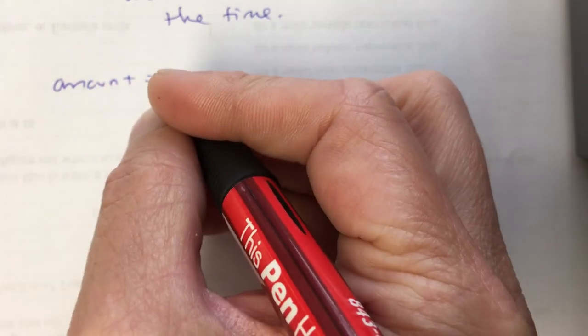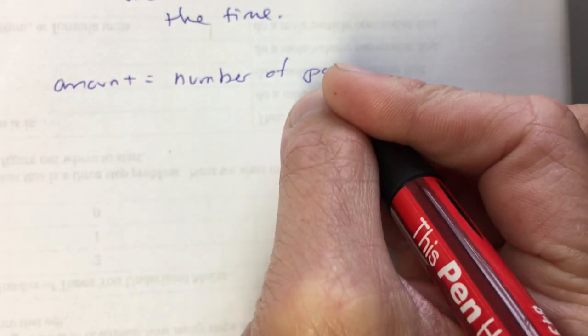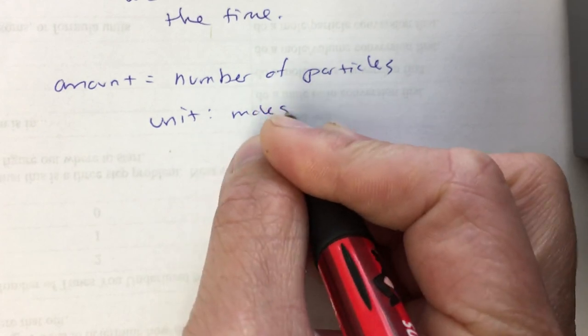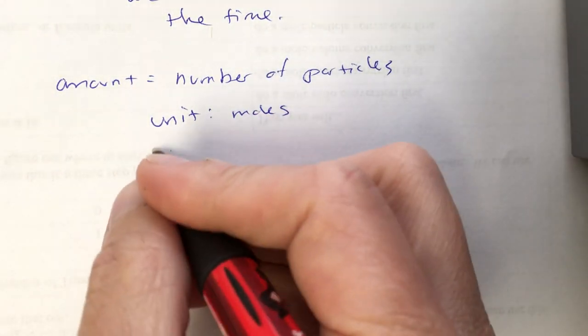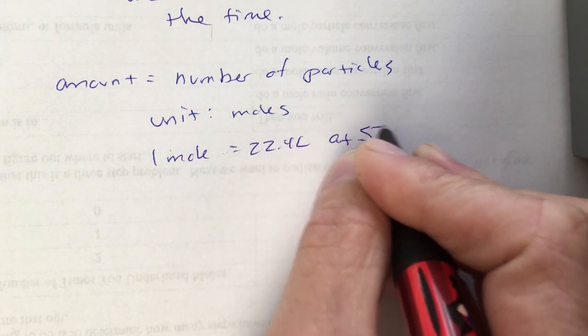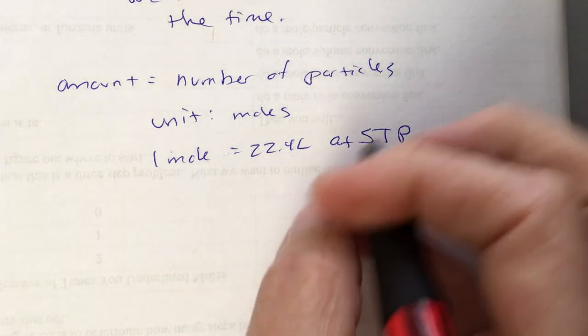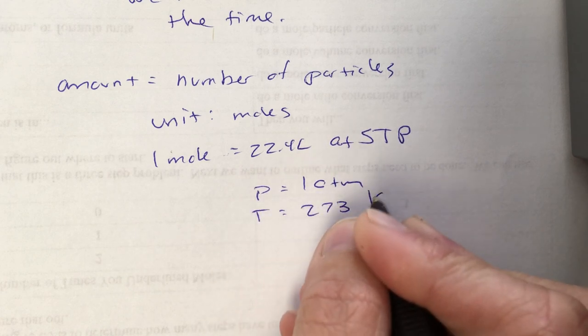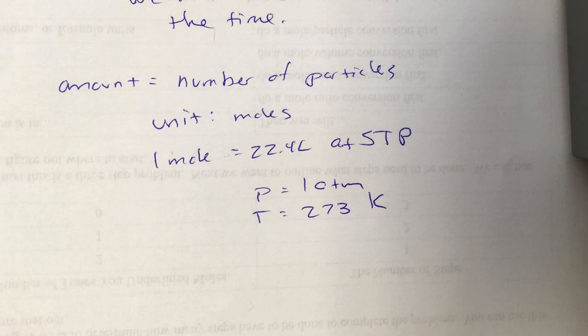Last way we measure a gas is by amount. That's the number of particles. That's measured in moles. There are no other units. We know one mole of a gas is 22.4 liters at STP. STP is standard temperature and pressure. The pressure would be one atmosphere. The temperature 273 Kelvin. So that one atmosphere and 273 Kelvin, one mole of gas is 22.4 liters. We've been doing that stoichiometry so long, I don't think we need to talk about moles much more. So that's that for now. Have fun.